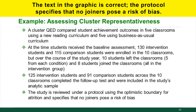125 intervention group students and 91 comparison group students across the ten classrooms completed the follow-up test and were included in the study's analytic sample. The study is reviewed under a protocol using the optimistic boundary for attrition and specifies that all joiners pose a risk of bias.